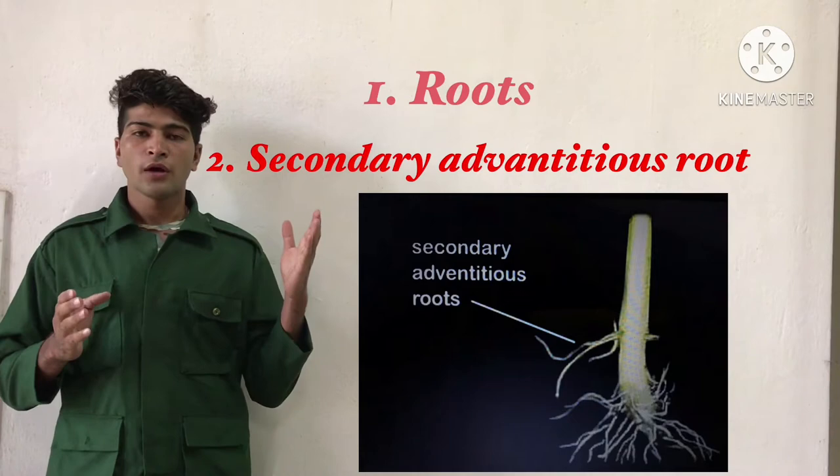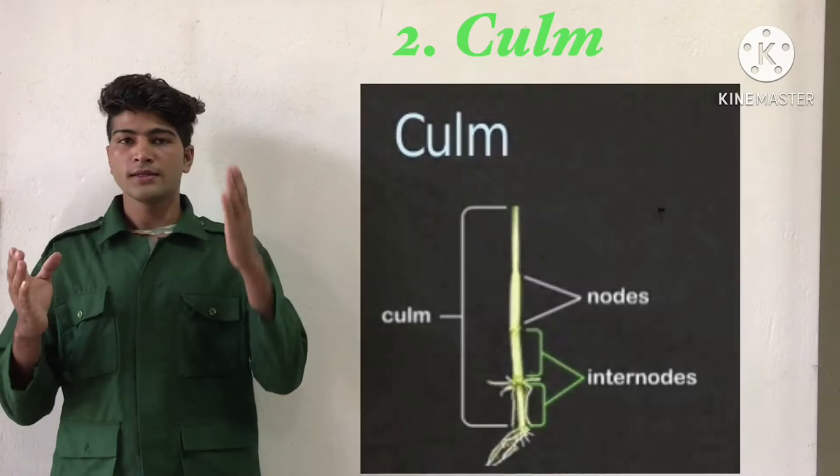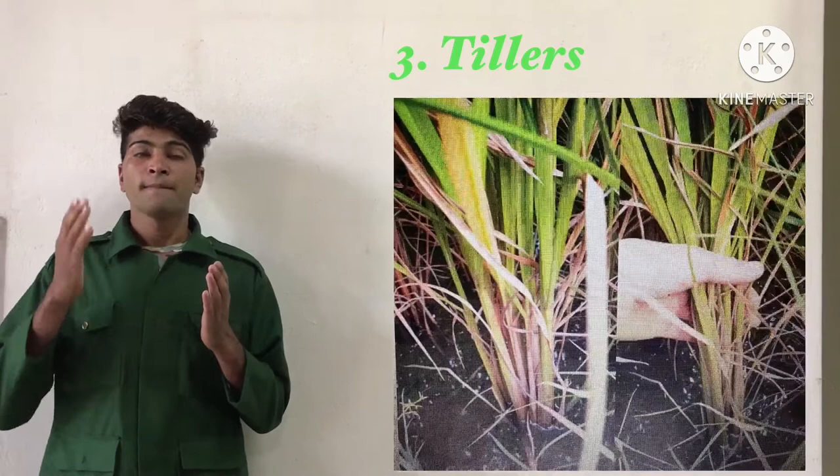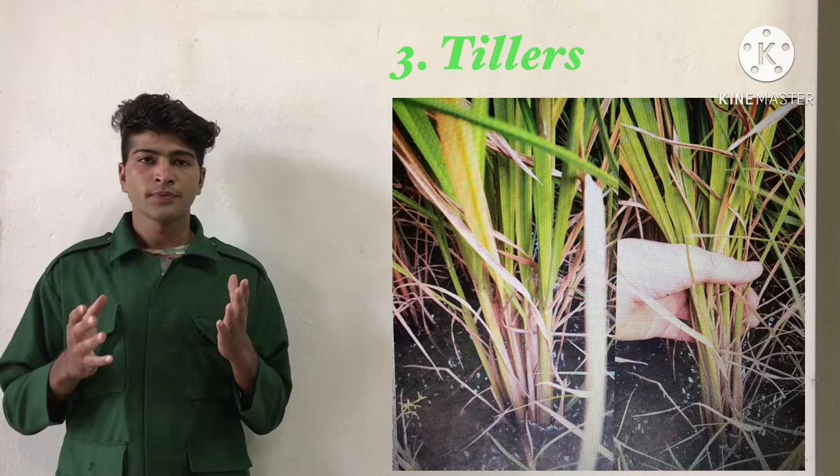The culm is the plant's main stem, made up of a series of nodes and internodes. Regarding tillers, the main culm is also known as the primary tiller. The primary tiller gives rise to the secondary tiller, and the secondary tiller gives rise to the tertiary tiller. Each individual tiller is an independent plant.